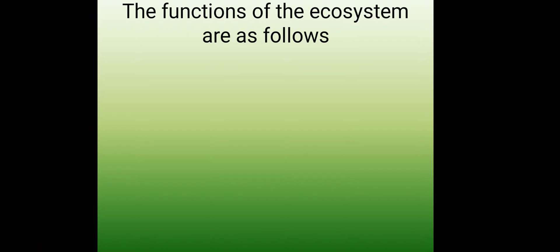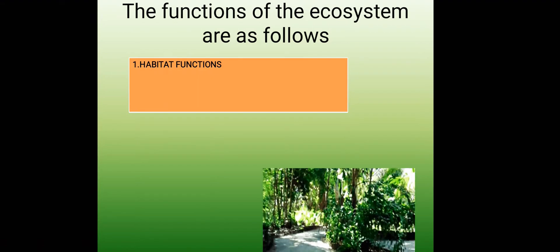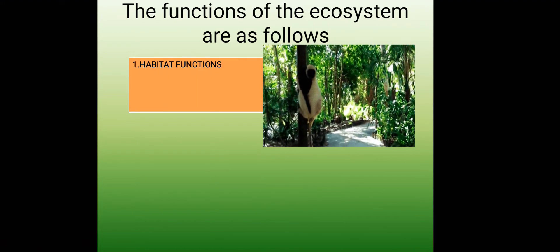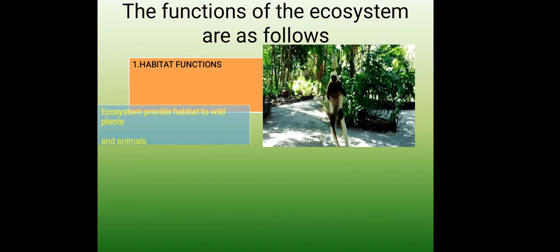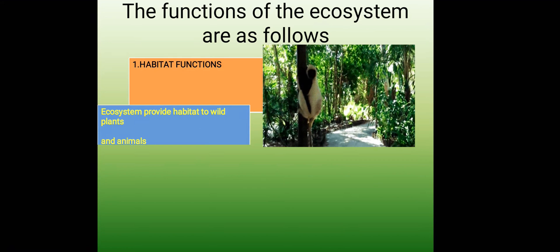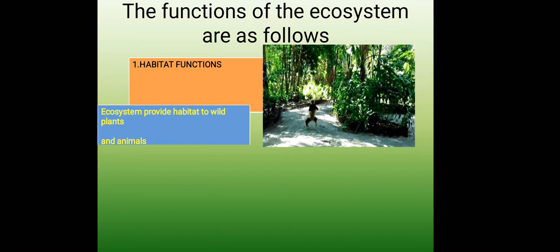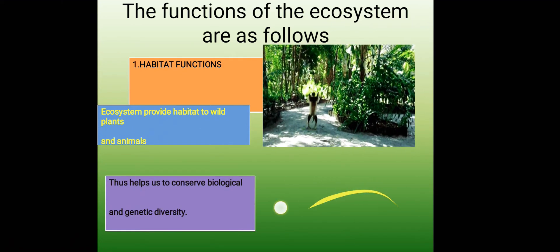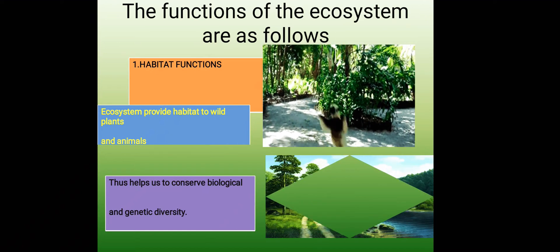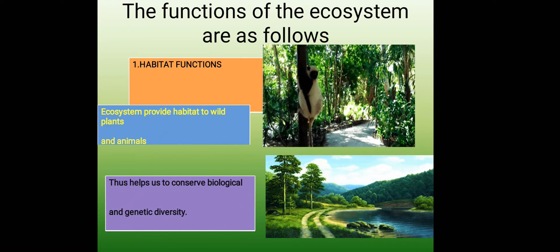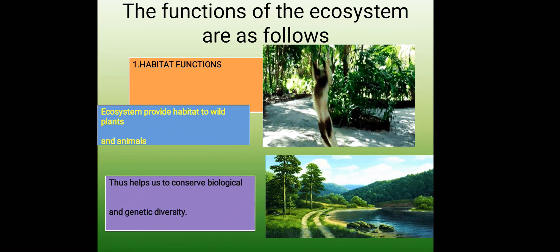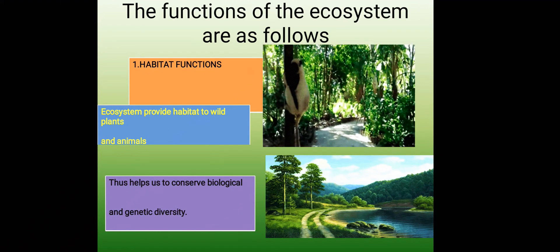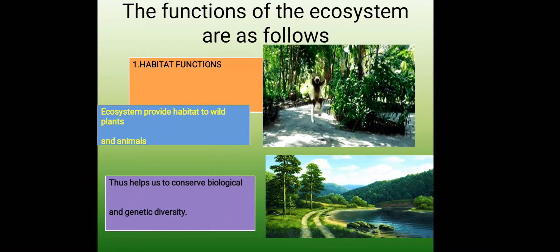The functions of the ecosystem are as follows. The first is the habitat function: ecosystems provide habitats to wild plants and animals, thus helping to conserve biological and genetic diversity.